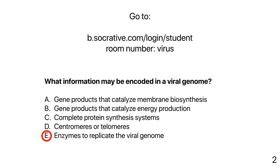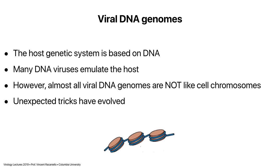DNA genomes: our host genetic system is based on DNA, so many DNA viruses are essentially emulating what's happening in their host. However, RNA viruses are different because the genome of cells is not RNA — different events have to occur in RNA virus-infected cells. But most viral DNA genomes are not like cellular DNAs at all; their structure is very different. They do not have the same kind of chromatin structure — no chromatin at all, in fact. So different mechanisms have evolved to replicate these viral DNAs, quite different from the host cell.